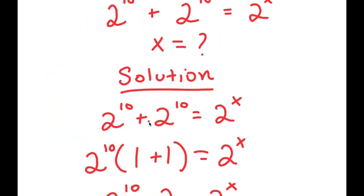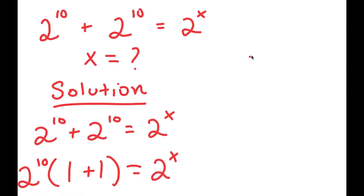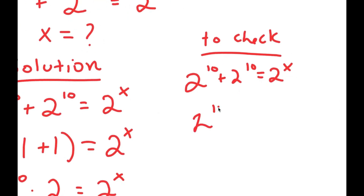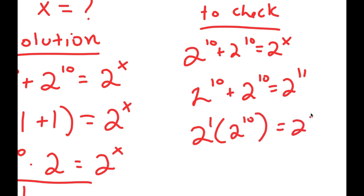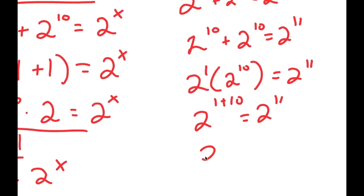The final step — which we always have to do in every equation — is to check our answer. Our equation was 2 to the power of 10 plus 2 to the power of 10 equals 2 to the power of x. We got x equals 11, so we check: 2^10 plus 2^10 equals 2^11. That's the same as 2 times 2^10, which equals 2 to the power of 1 plus 10, equal to 2 to the power of 11. Confirmed.